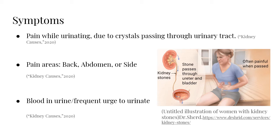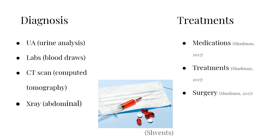Pain in areas such as the back, abdomen, or side are also signs of kidney stones passing through. The picture to the right is a visual representation of kidney stones passing through the ureter into the bladder. The American Kidney Fund listed a number of different methods used to diagnose kidney stones — urine analysis, blood draws, CT scans, and abdominal x-rays are common diagnostics used.